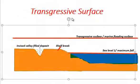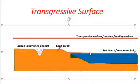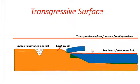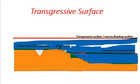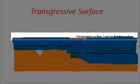The other names used for transgressive surface are marine flooding surface and maximum regressive surface. After maximum fall, the sea level rises gradually and covers the shelf area for the first time — the shelf is submerged underwater for the first time after maximum fall below the shelf break. When the shelf is submerged by marine water for the first time, this surface is known as the transgressive surface, marine flooding surface, or maximum regressive surface.